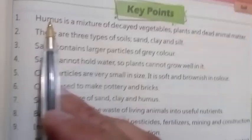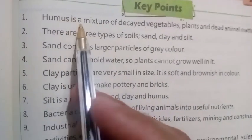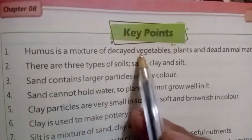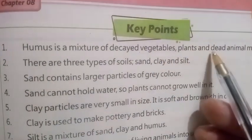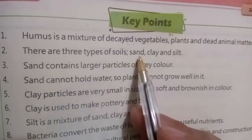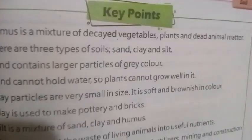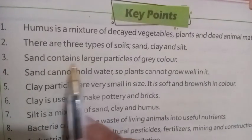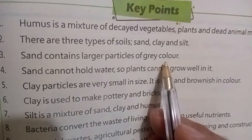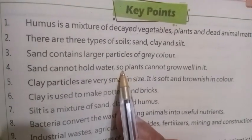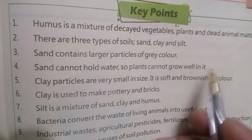Summary review points: One — humus is a mixture of decayed vegetables, plants, and dead animal matter. Two — there are three types of soil: sand, clay, and silt. Three — sand contains larger particles of grey color. Four — sand cannot hold water, so plants cannot grow well in it.